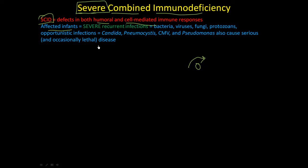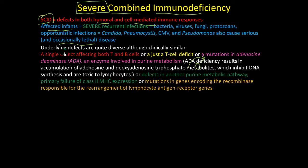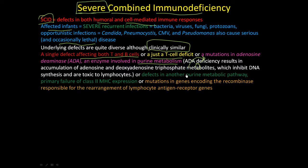These infections can cause serious disease and can occasionally be lethal. The underlying defects are quite diverse. Causes include a single defect affecting both T and B cells, a T cell defect alone, or a mutation in adenosine deaminase (ADA), an enzyme involved in purine metabolism. ADA deficiency leads to accumulation of adenosine and deoxyadenosine triphosphate metabolites, which inhibit DNA synthesis and are toxic to lymphocytes.